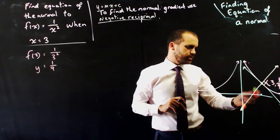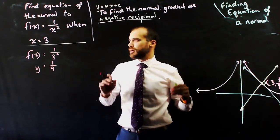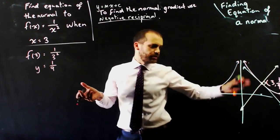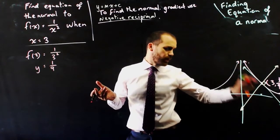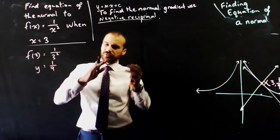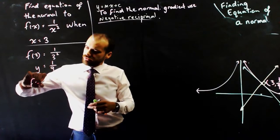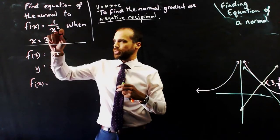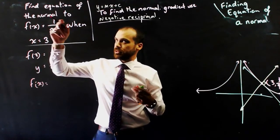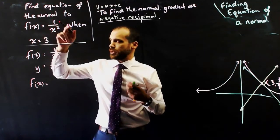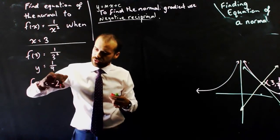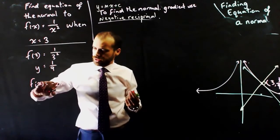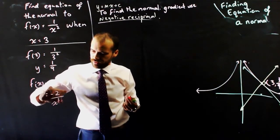So it's three, one ninth. It must be much further down there. Okay, now that I've got that, I just need to find the gradient of my normal. I need to find the gradient of my curve at that point first. So f'(x) is going to be equal to - I'm going to do this all in my head - negative two x to the negative three, which is the same as negative two on x to the three.